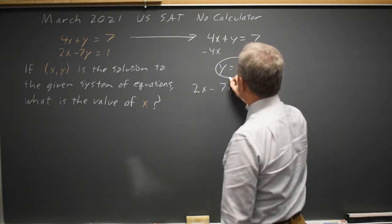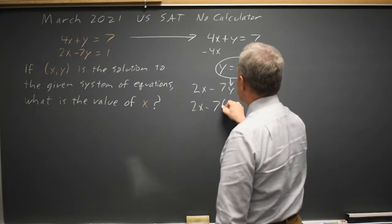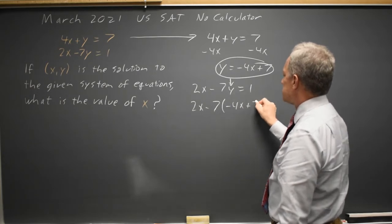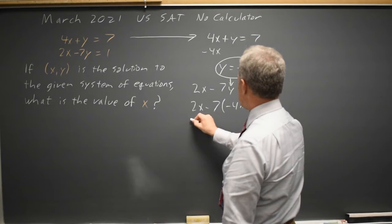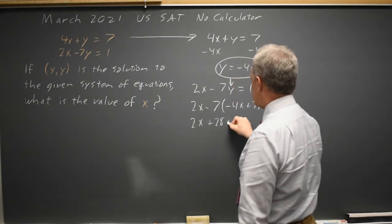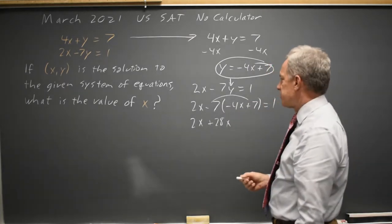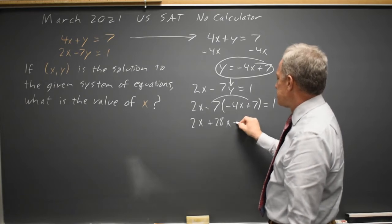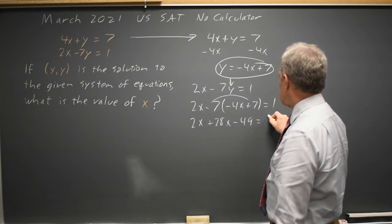If I substitute this expression in for y here, I get 2x minus 7 times the quantity negative 4x plus 7 equals 1. So that's 2x, negative 7 times negative 4 is positive 28x, and distributing the negative 7 to the positive 7 inside the parentheses, 7 times 7 is 49 — make sure you bring the negative — so that's negative 49 equals 1.